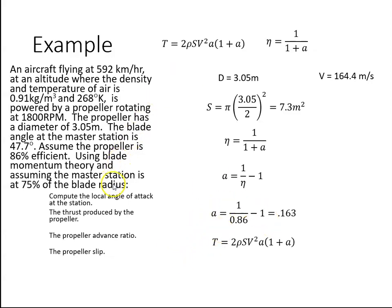Now I have all the values I need to calculate the thrust. I have the density 0.91, I have the area, I have the velocity, and I have a. So I can plug those values into this equation T = 2ρSV²a(1+a), and when I do that, I get the thrust to be 28.44 kilonewtons.